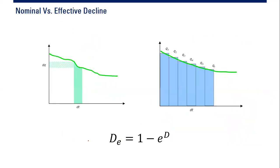Fortunately, we can relate them very easily using this formula: effective decline rate equals one minus exponential of the negative nominal decline rate. So they are connected and related to each other. I hope you enjoyed this video and found it useful. Thank you so much for watching and see you again in the next Engman videos.